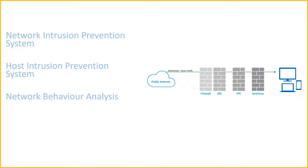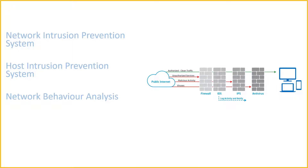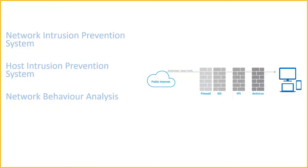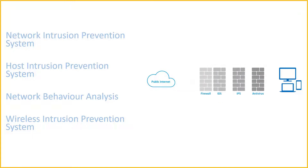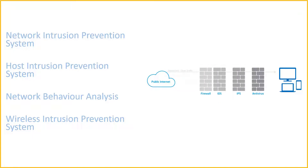Next is network behavior analysis, which analyzes network traffic to detect unusual traffic flows such as DDoS attacks. The next is the wireless intrusion prevention system, which scans a Wi-Fi network for unauthorized access and removes unauthorized devices from the network.